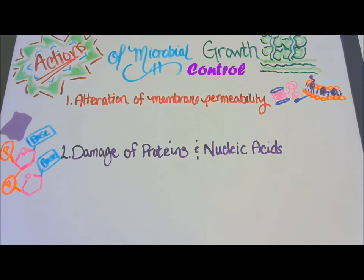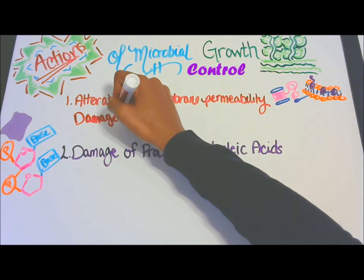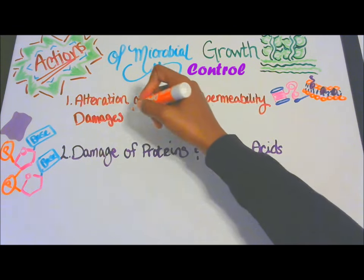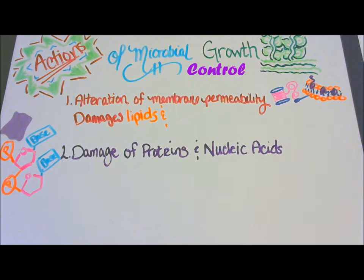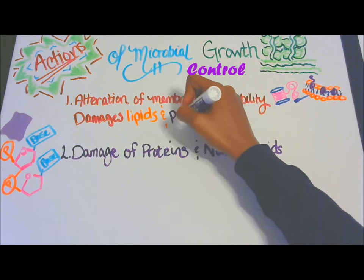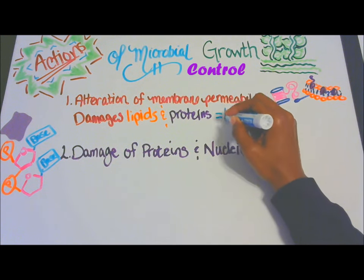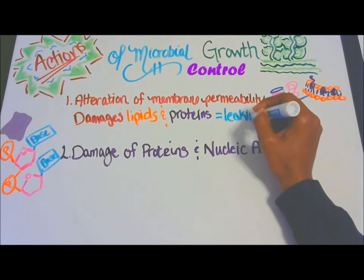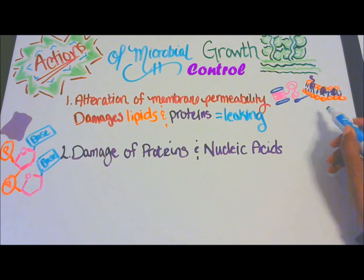Actions of microbial growth: number one is the alteration of membrane permeability. This damages the lipids and proteins, and results in leaking — and cells do not want leaks. When you think of alteration, think of sewing and altering clothes. Here I have a thread and needle with the plasma membrane.